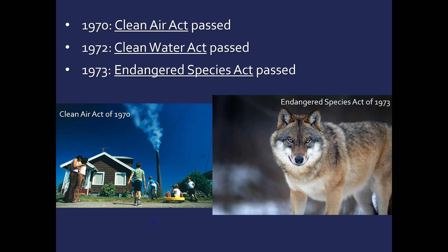Also in 1970, the Clean Air Act was passed, putting new regulations and limits on how much pollution — particularly from factories — could be put into the air. In 1972, the Clean Water Act was passed, which does basically the same thing for water. Then in 1973, the Endangered Species Act was passed. In the early 1970s, we see this flurry of activity — the idea that we have to do something now to protect the environment before it's too late really gains steam.